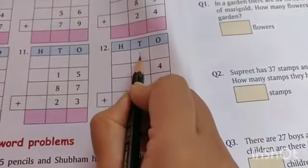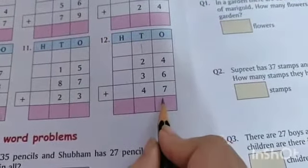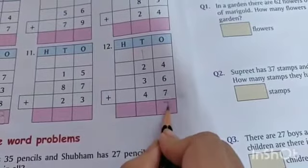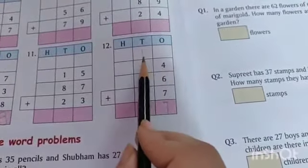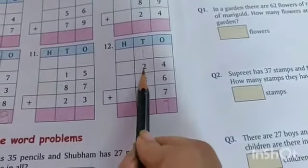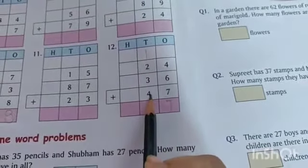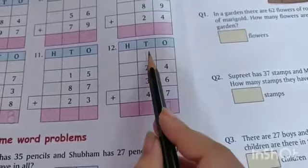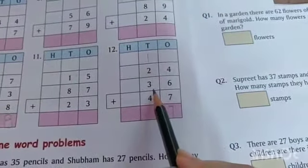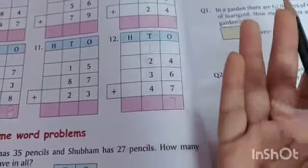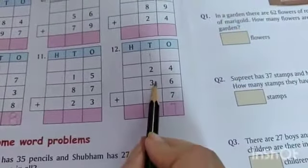So 1 carry to the tens column and 7. Now in the tens column, here we have to add 1, 2, 3, and 4. So 2 plus 1 is 3. 3 plus 3 is 6. Add with your fingers: 3, 4, 5, 6.